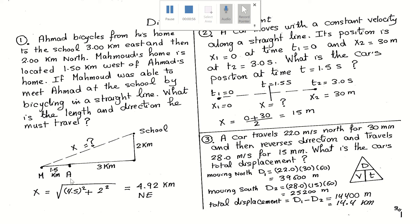So here we have two people: Ahmed, which I use A to represent, and Mahmoud, which I use M to represent. Both of them are heading to school. What Ahmed did is he moved 3 kilometers east, then 2 kilometers north, while Mahmoud moved in a straight line.